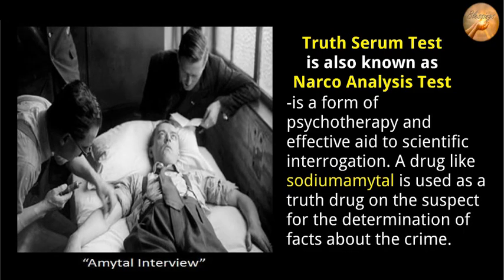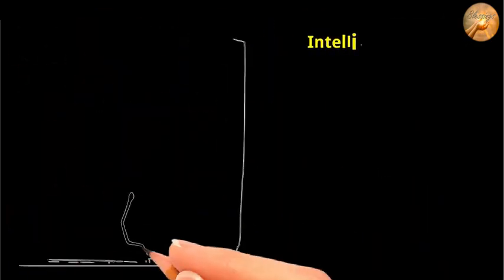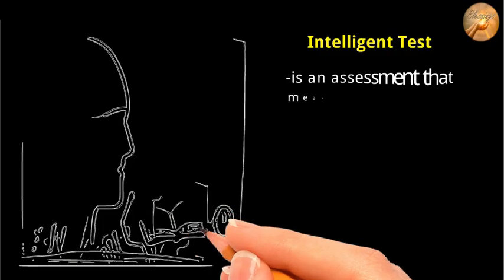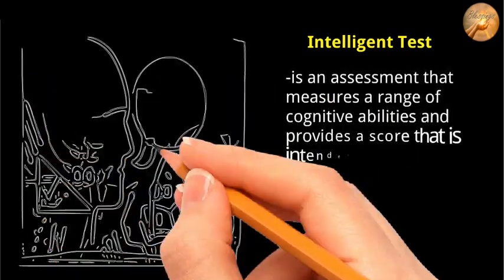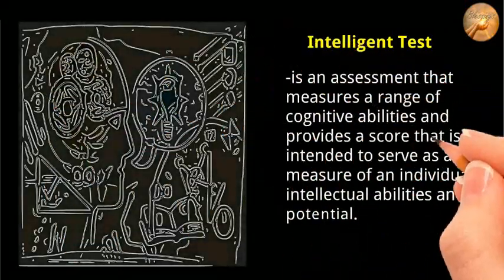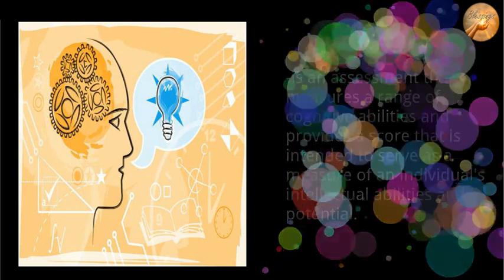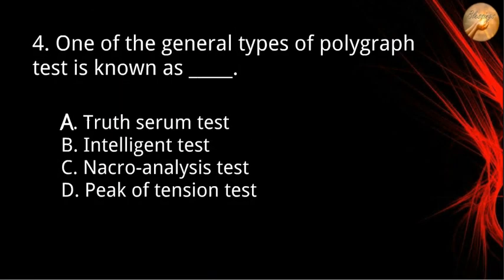An intelligent test is an assessment that measures a range of cognitive abilities and provides a score intended to serve as a measure of an individual's intellectual abilities and potential. IQ tests are among the most administered psychological tests. Again, the correct answer for number four is letter D, peak of tension test.